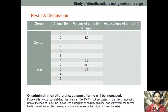In the test group, the urine volume ranges around 11 ml, 10.8 ml, 10 ml, and so on.